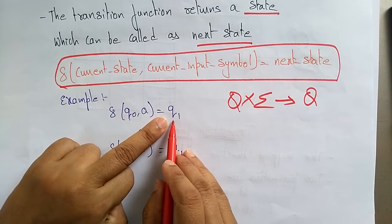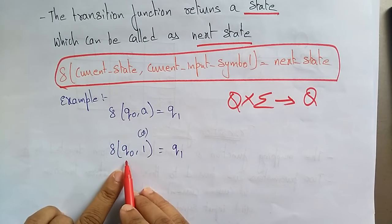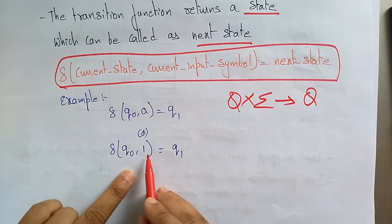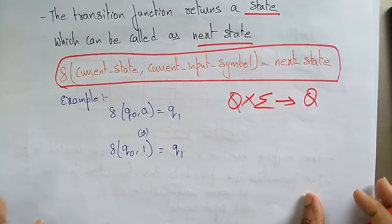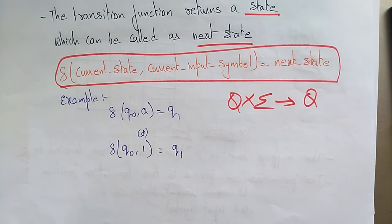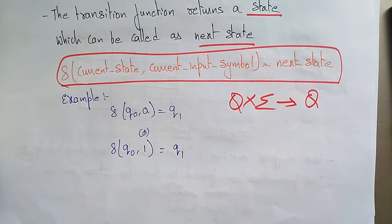Similarly, delta(q naught, 1) points to q1. This covers the transition diagram, transition table, and transition function from the previous example. Thank you.